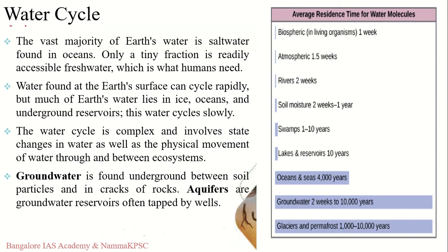The first cycle we will cover is the water cycle. I'm pretty sure everybody has some understanding of it, so we will just briefly go through it. The water cycle is complex and involves state changes in water as well as the physical movement of water through and between ecosystems.